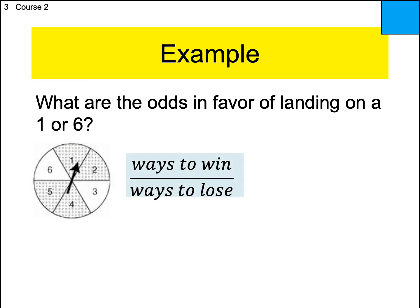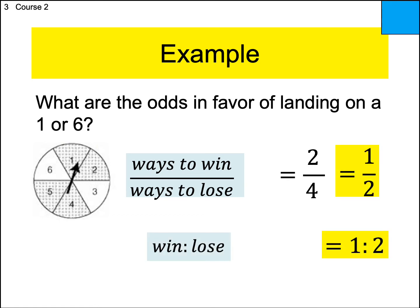What are the odds in favor of landing on a one or a six? Odds in favor are ways to win over ways to lose. There's only one 1 and one 6 on the spinner, so there are two ways to win. How many ways to lose? Not landing on a one or a six — landing on a two, three, four, or five — that's four ways. If this were probability, the bottom number would be six. Reduce and write in colon form: one to two odds. The odds against would just be two to one.